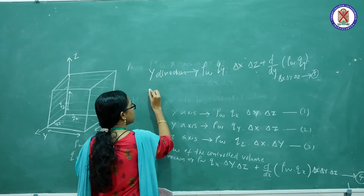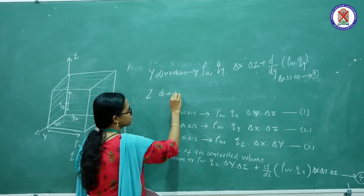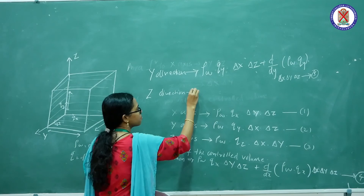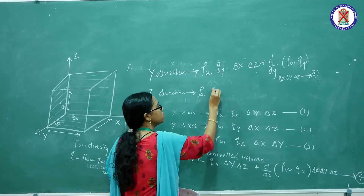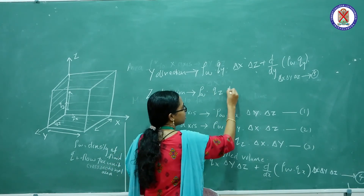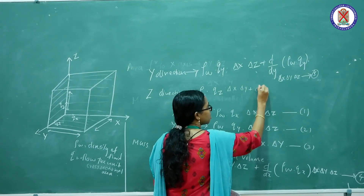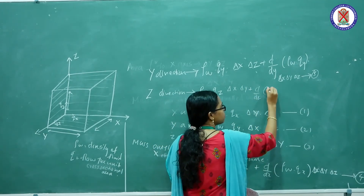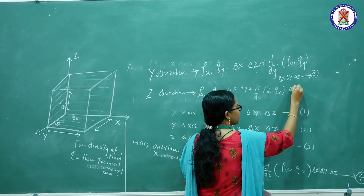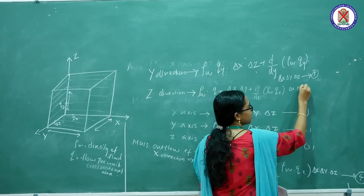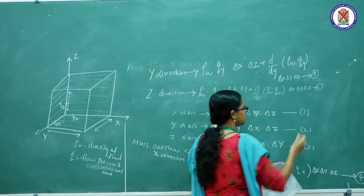And in the z-direction, the mass outflow will be: rho_w into qz into delta x into delta y, plus d/dz of rho_w into qz into delta x into delta y into delta z. This is Equation 6.